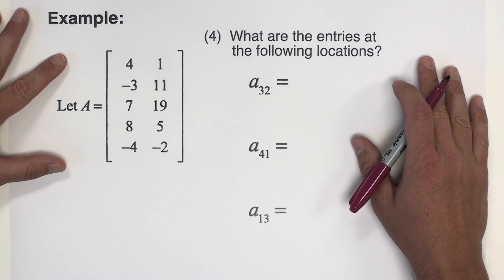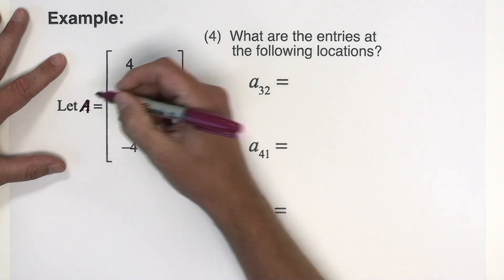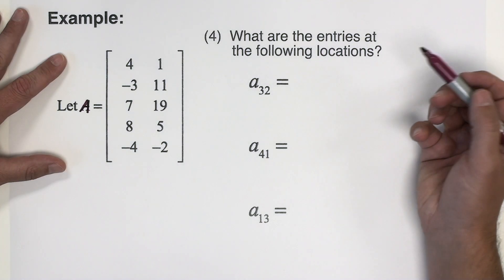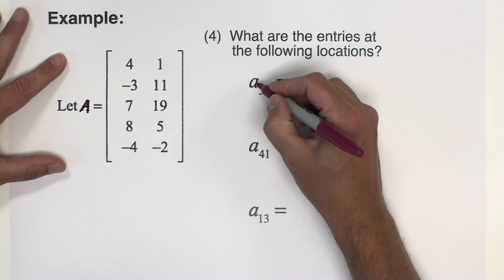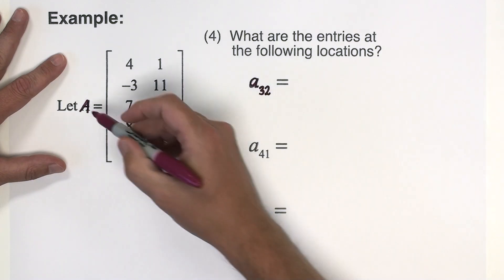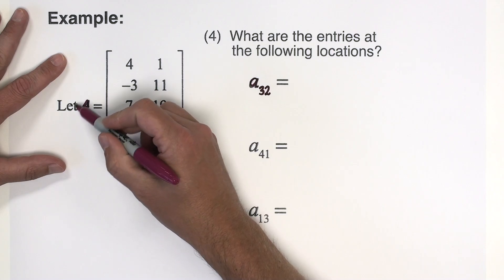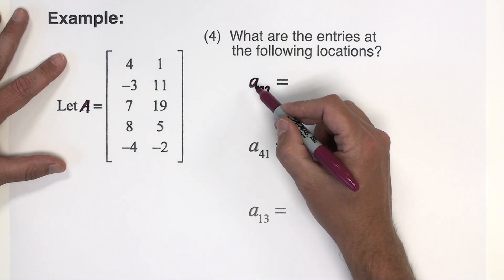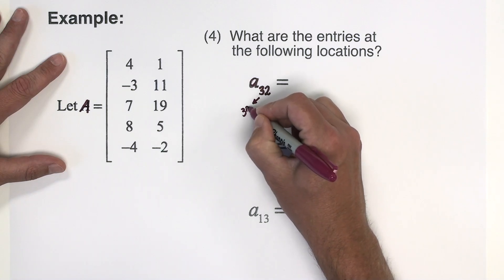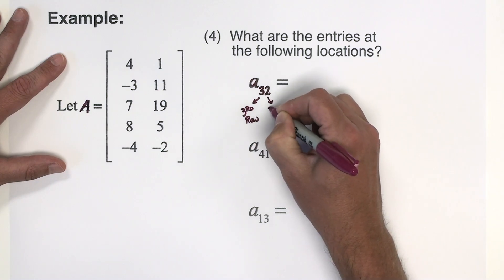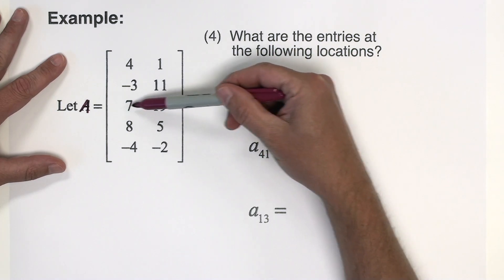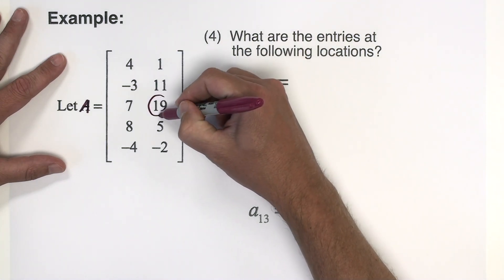This next slide is a continuation of the last one — the same matrix A with new questions. What are the entries at the following locations? We see A sub 32. The entries are always going to be denoted with lowercase letters corresponding to the uppercase name of the matrix. So capital A for the matrix, lowercase a for a number within it. The address A sub 32 means the entry in the third row, second column. Going to the third row and the second column over, that number is 19.